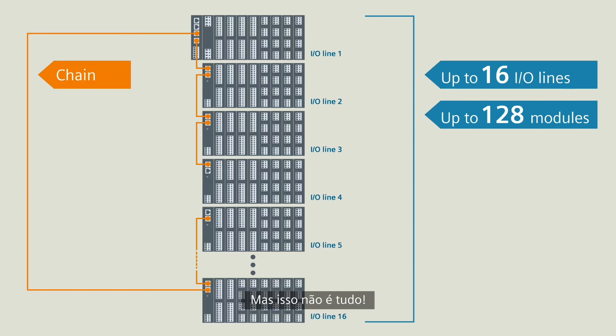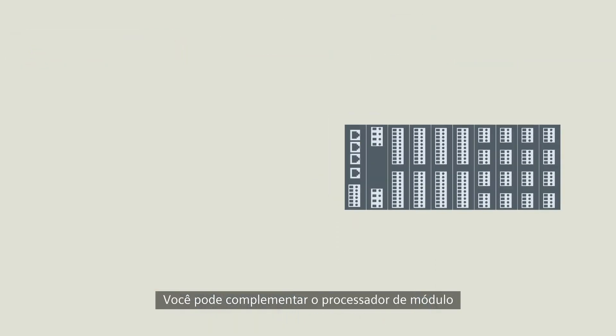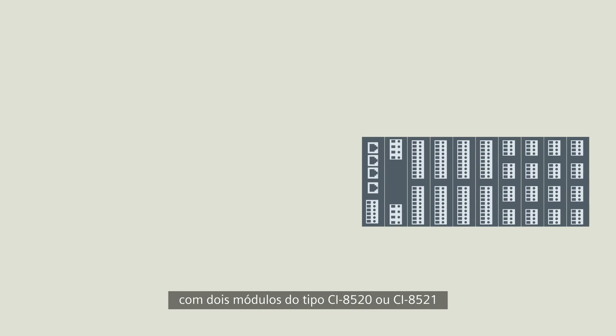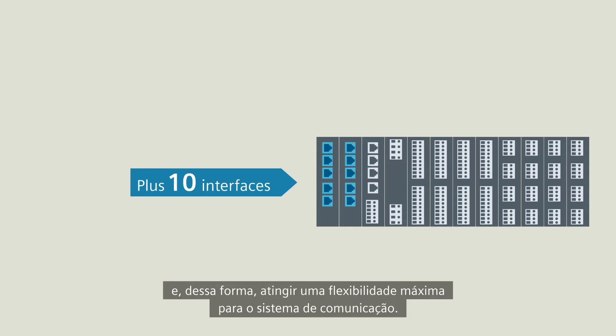You can complement the processor module with two modules of the type CI 8520 or CI 8521, and in that way achieve the maximum flexibility for the system communication.